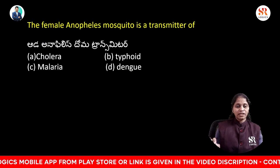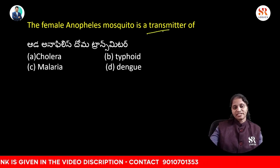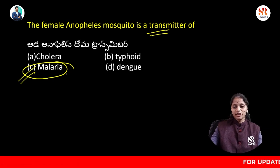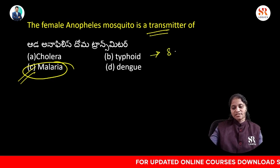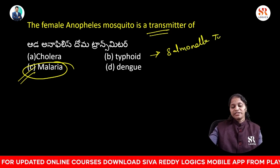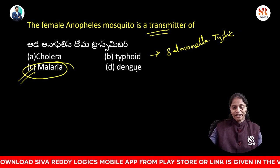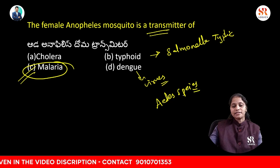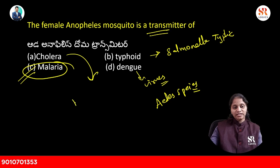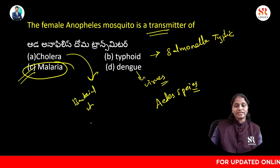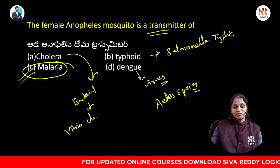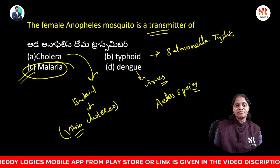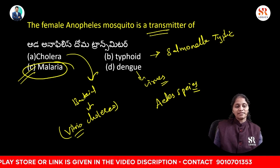The female Anopheles mosquito is a transmitter of — cholera, typhoid, malaria, or dengue? The answer is malaria. Malaria can be transmitted through the female Anopheles mosquito. Typhoid is a bacterial disease caused by Salmonella typhi. Dengue spreads through the bite of infected Aedes species mosquito. Cholera is a bacterial disease caused by Vibrio cholerae. The female Anopheles mosquito is specifically the transmitter of malaria.